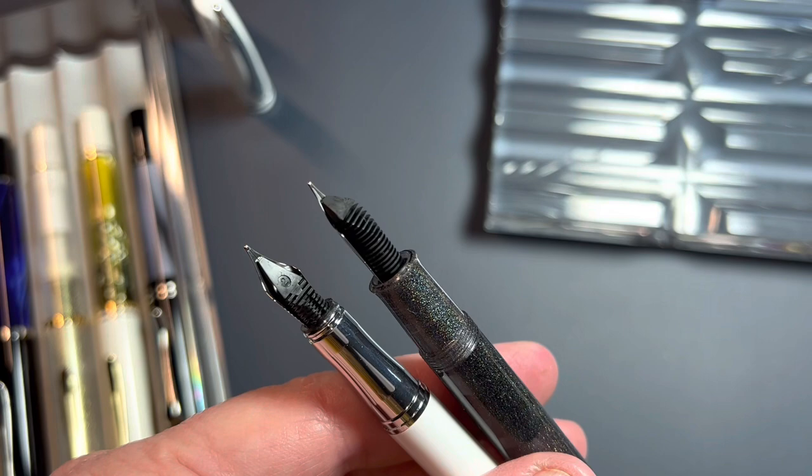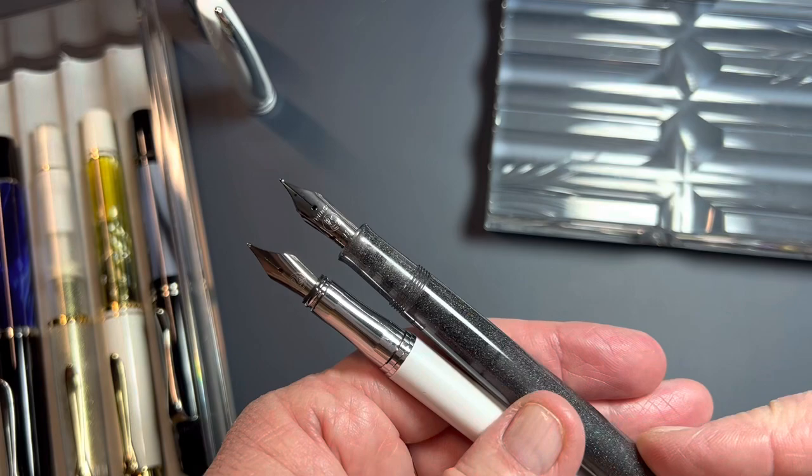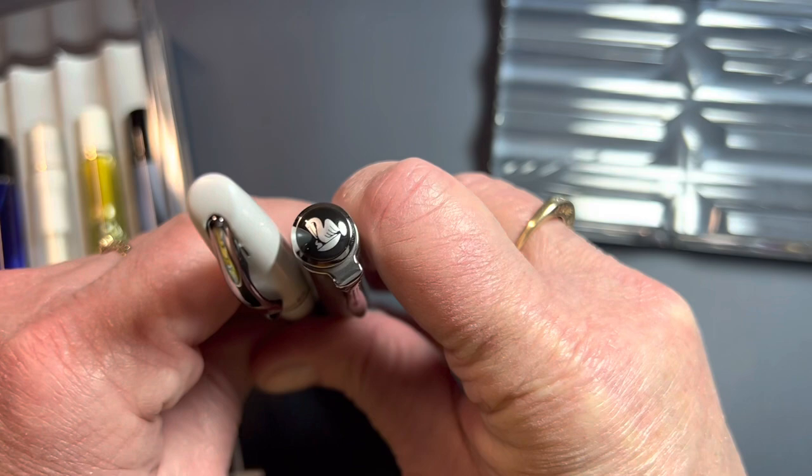And then the grip section. So, again, on the M200 there is a finial with the Mama Pelican. And this one has nothing. Just a slant.